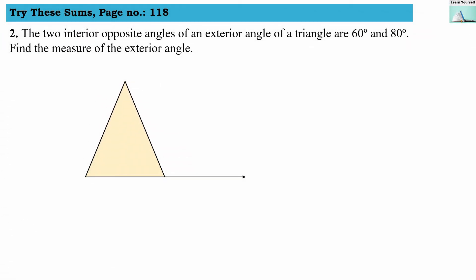The second numerical: the two interior opposite angles of an exterior angle of a triangle are 60 degrees and 80 degrees. Suppose this is our triangle A, B, and C, with one more point E, so angle ACE is the exterior angle. The interior opposite angles are 60 degrees and 80 degrees, with angle A marked as 60 degrees and angle B as 80 degrees.